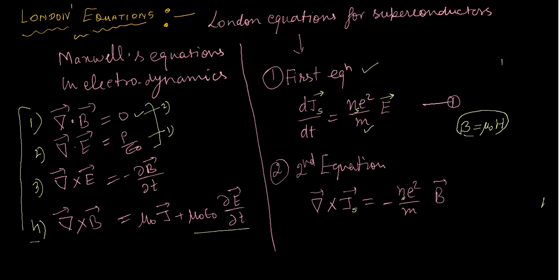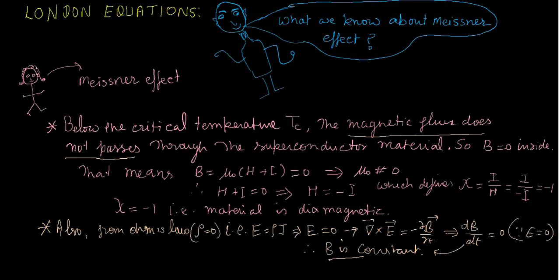We have to derive these two equations in this video lecture. Before going into the derivation of the London equations, it is important to understand the Meissner effect. The Meissner effect states that below the critical temperature T_c, the magnetic flux does not pass through the superconducting material.